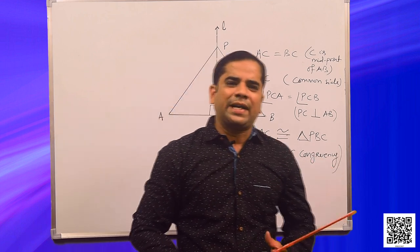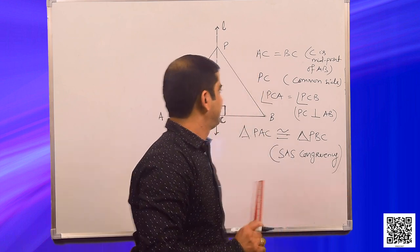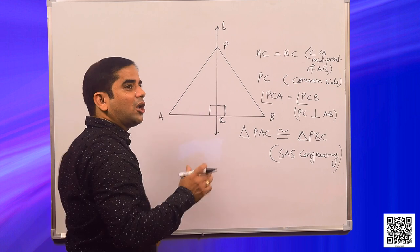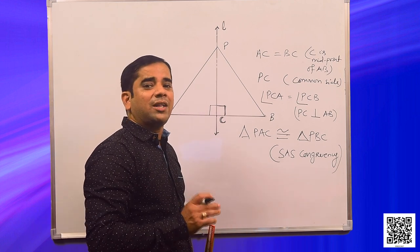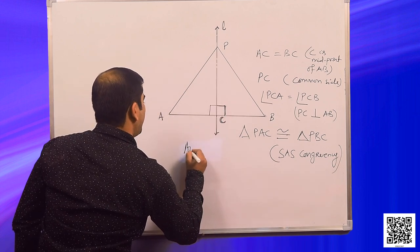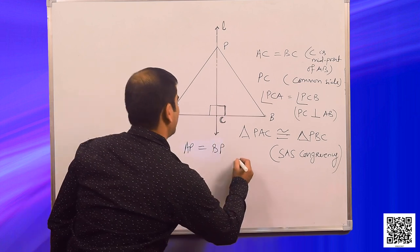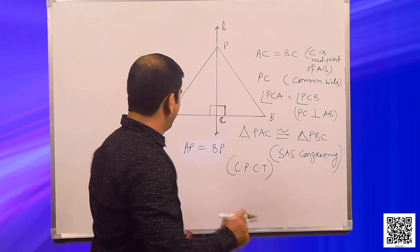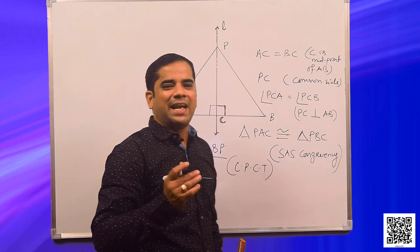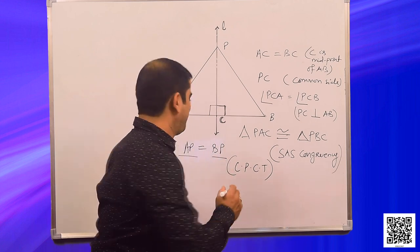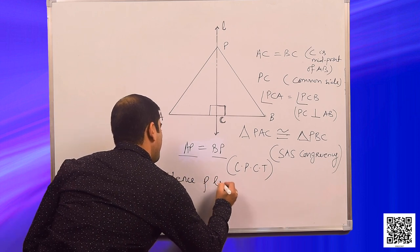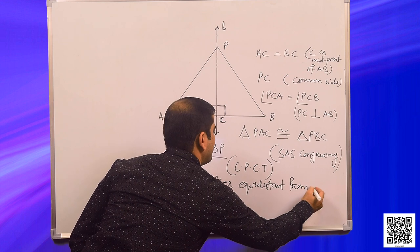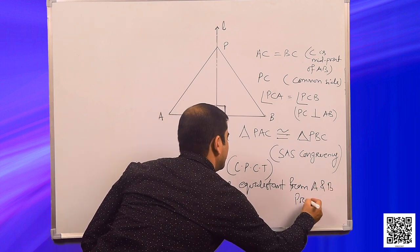As these two triangles are congruent to each other, all other sides and angles are also equal. That means AP is equal to BP — by CPCT, corresponding parts of congruent triangles. So AP is equal to BP, meaning P lies equidistant from A and B. Hence proved.